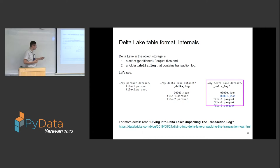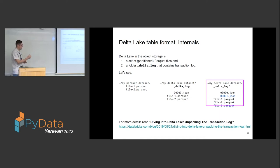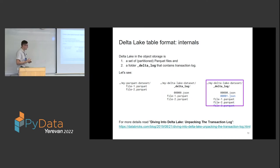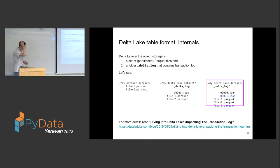With the original Parquet dataset, the reader would need to list the folder and find out which files to read. With Delta Lake, it gets this information from the metadata. This is also a great optimization because the listing operation is usually quite expensive in object storage. You can read more about this in the Databricks blog article referenced at the bottom.